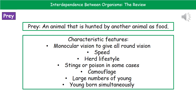In some cases prey will have a defense mechanism like stings or poison. They also need to be camouflaged so the predator can't find them. They will have large numbers of young when they give birth, because not all of them are going to survive, giving them a much better chance of at least some making it. The young will be born simultaneously, meaning they can be cared for amongst the herd and minimize the risk of individuals being picked off by nearby predators.